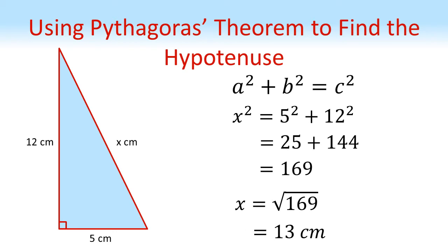One thing to check at this point is the hypotenuse should be the longest of the three sides. So we need to check that the answer we've got is longer. 13 is longer than 12 and 5 — it looks like a sensible answer.